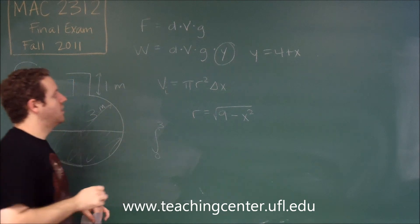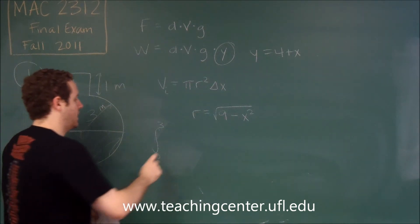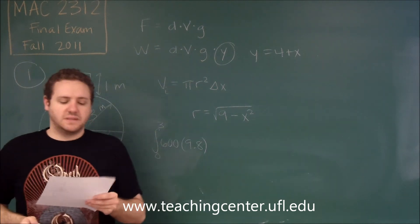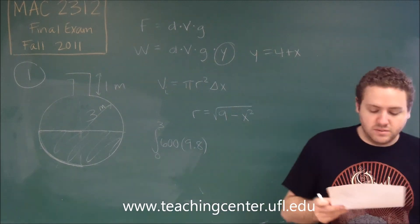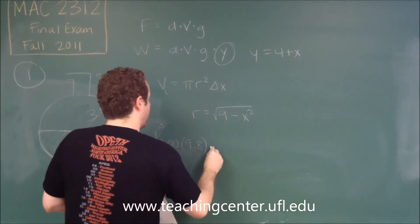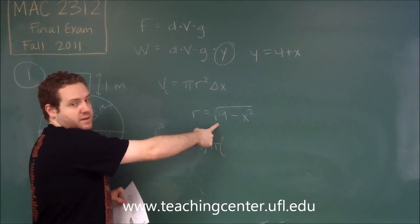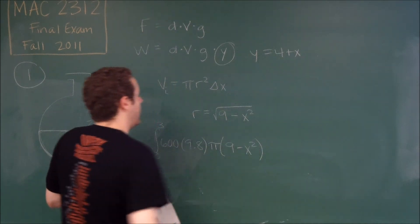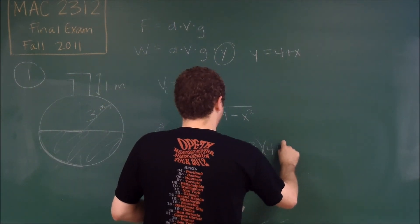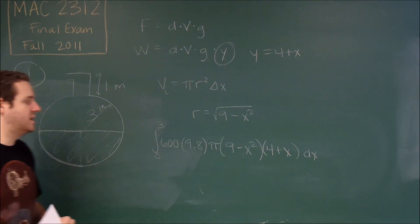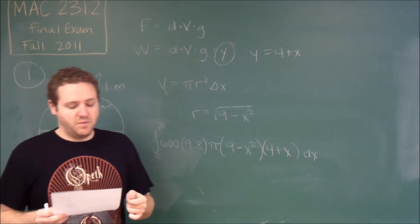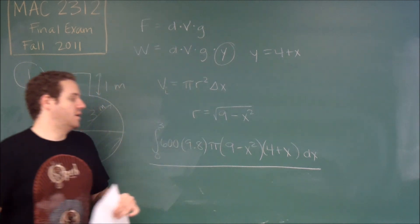Now we assemble the integral from 0 to 3. G (9.8) and density (600) are constants. Our volume integrand uses r² = (9 − x²) from the radius we derived, giving π(9 − x²). The pumping distance is (4 + x). So the full integral is 600 × 9.8 × π(9 − x²)(4 + x) dx from 0 to 3. As shown on the answer key, that is answer choice D.